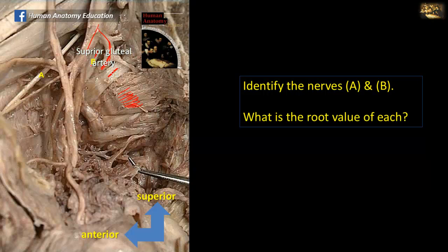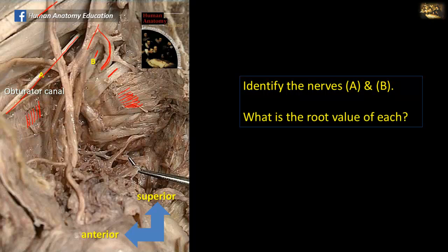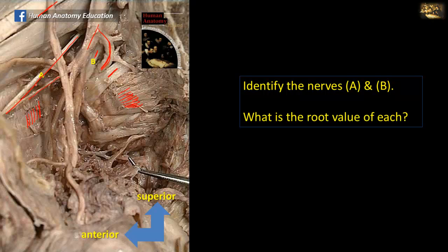So nerve B is the lumbosacral trunk. Nerve A is in the lateral wall of the pelvis; it enters the pelvis just deep to the bifurcation, in the region of the external iliac artery, and heads forward to the lateral wall where there is the obturator internus muscle and a small opening — the obturator canal. So nerve A is the obturator nerve, accompanied by the obturator artery, a branch of the internal iliac artery. The obturator nerve is a branch of the lumbar plexus: L2, 3, and 4.